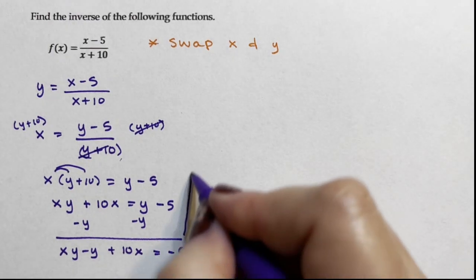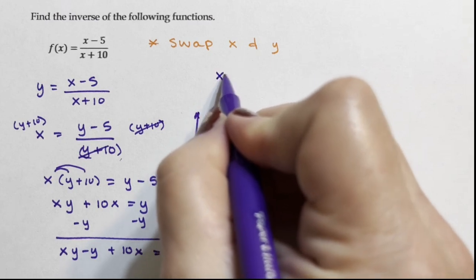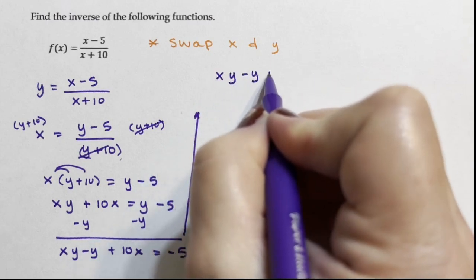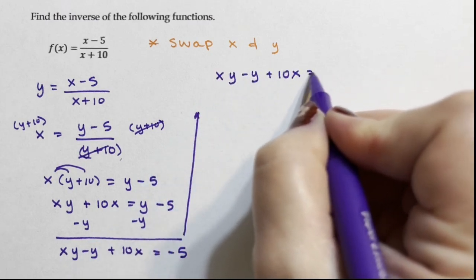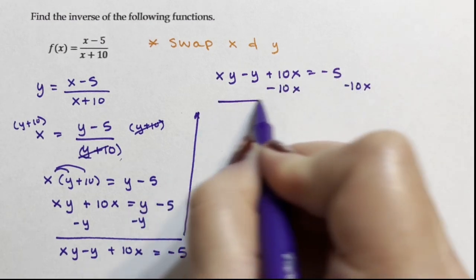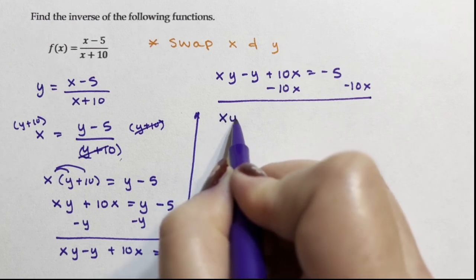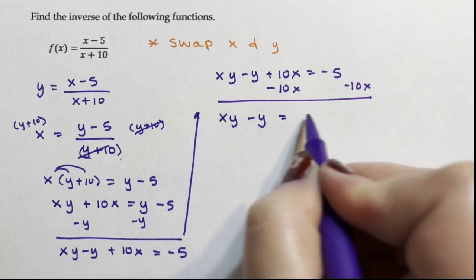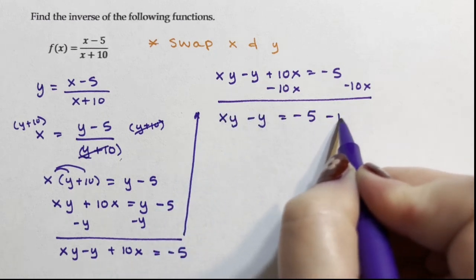And I'm going to rewrite this all up here. xy minus y plus 10x equals negative 5. Now I'm going to subtract 10x from both sides. So I have xy minus y equals negative 5 minus 10x.